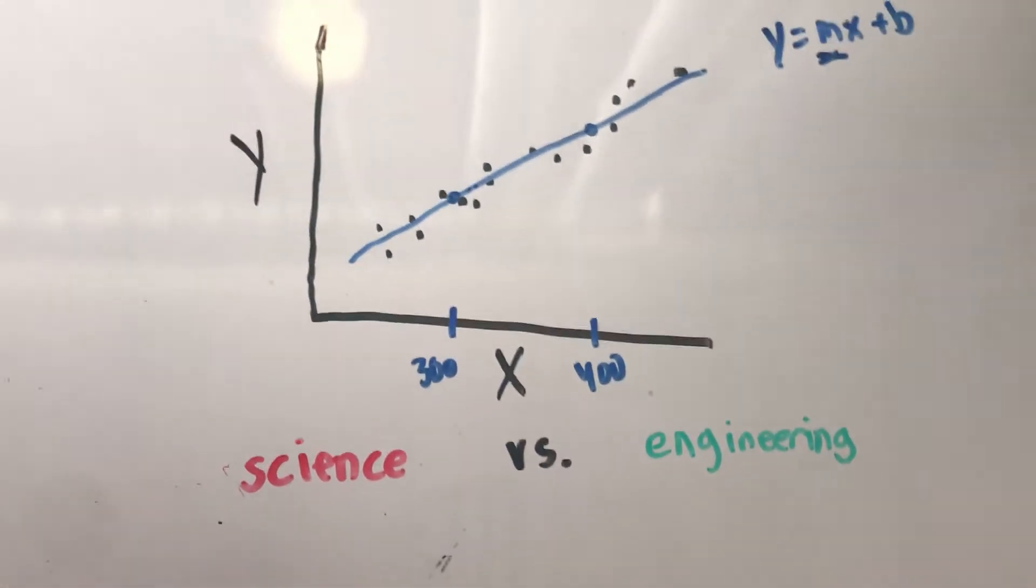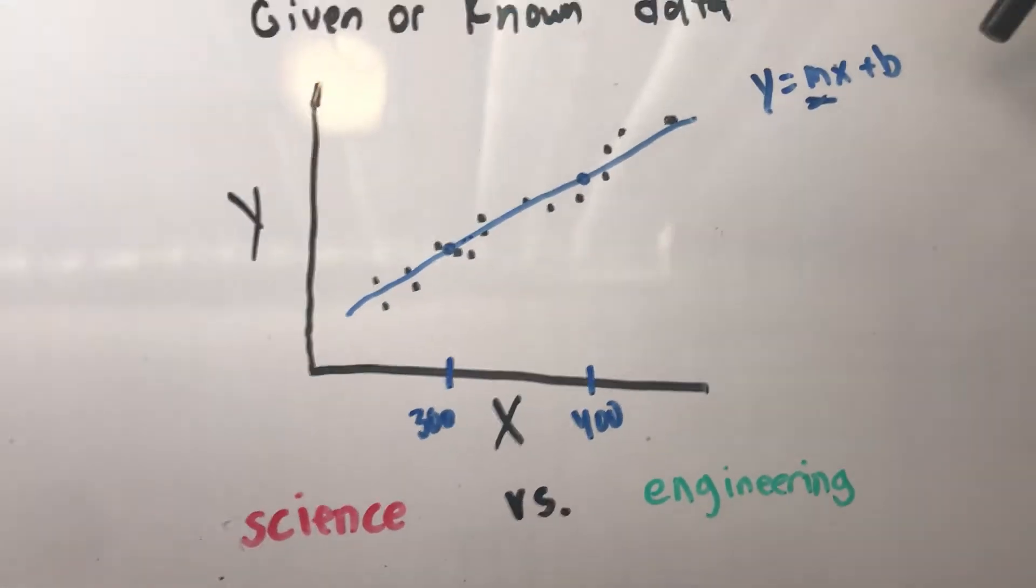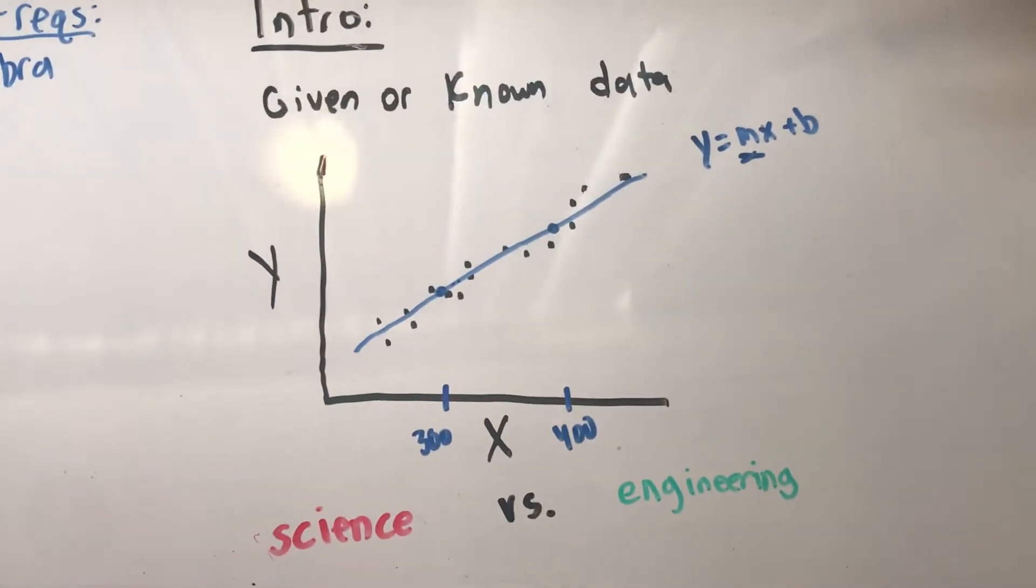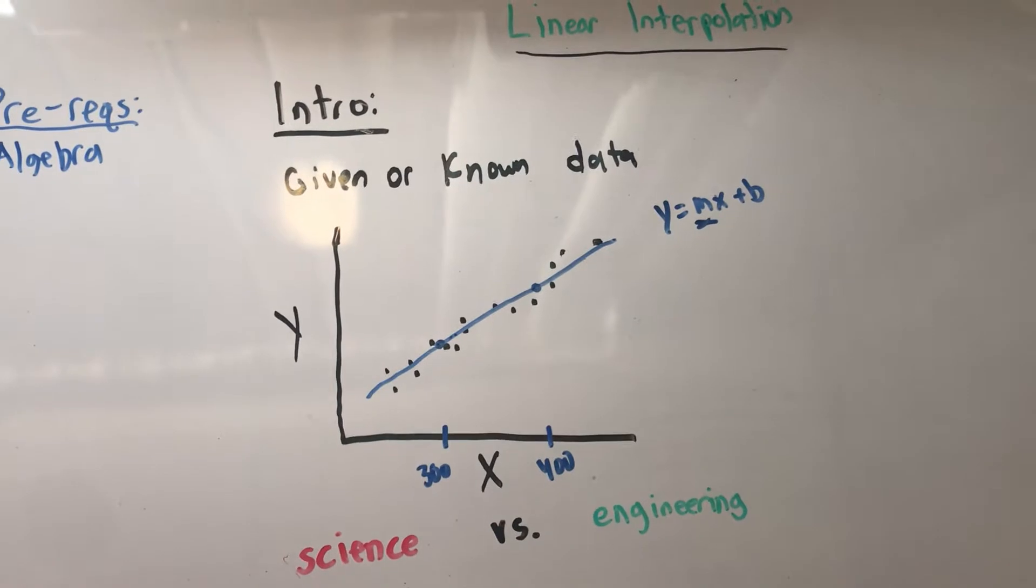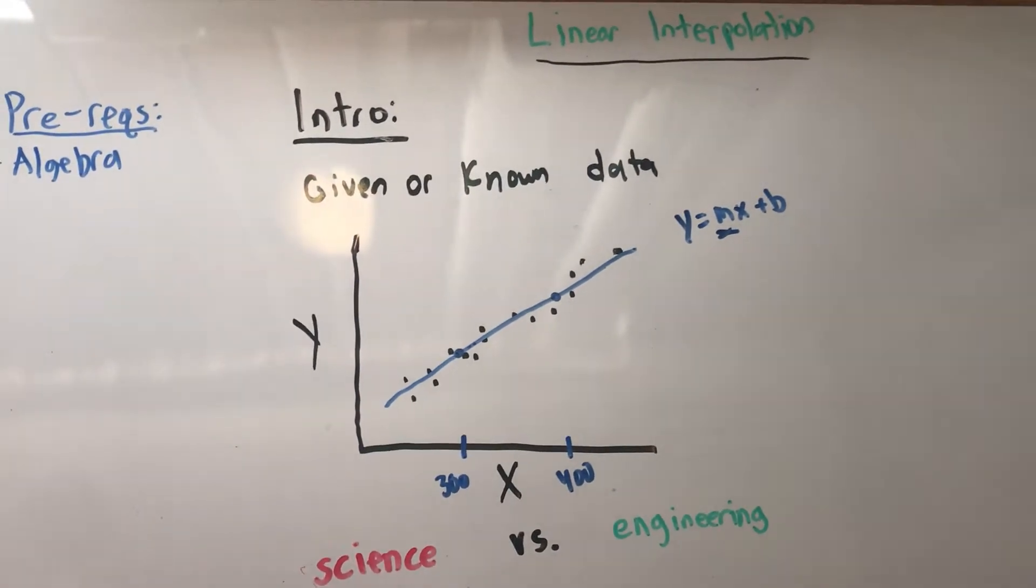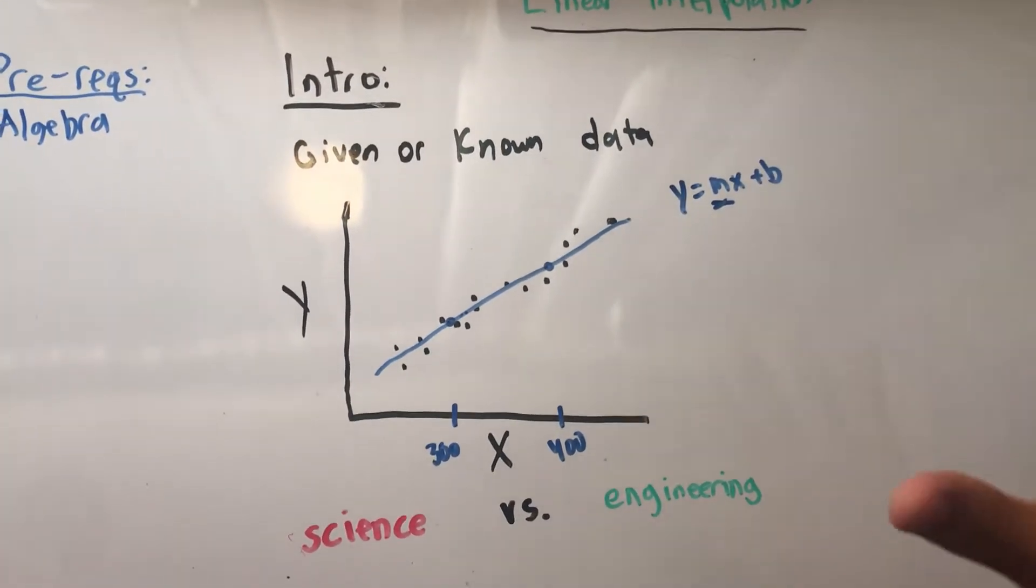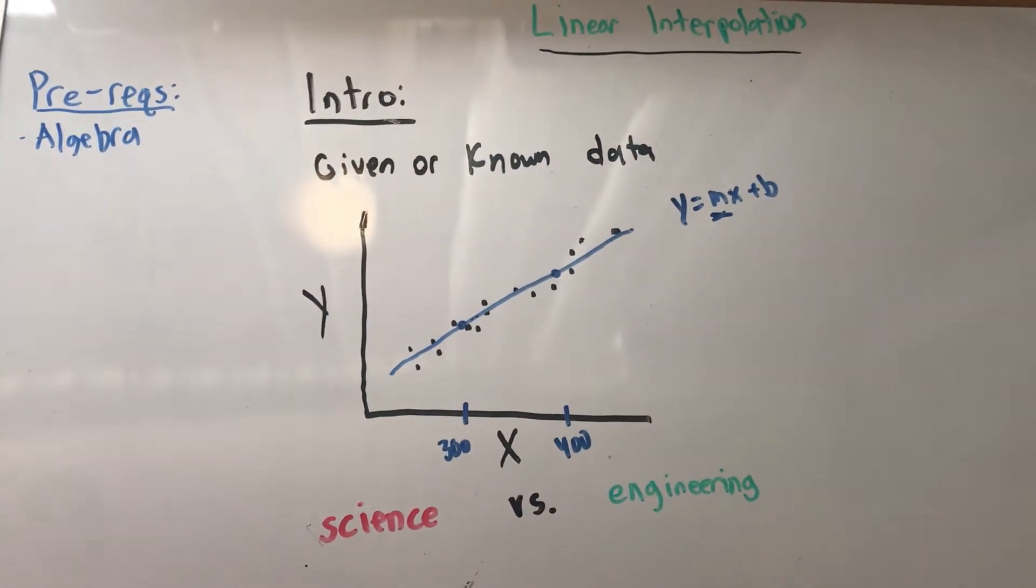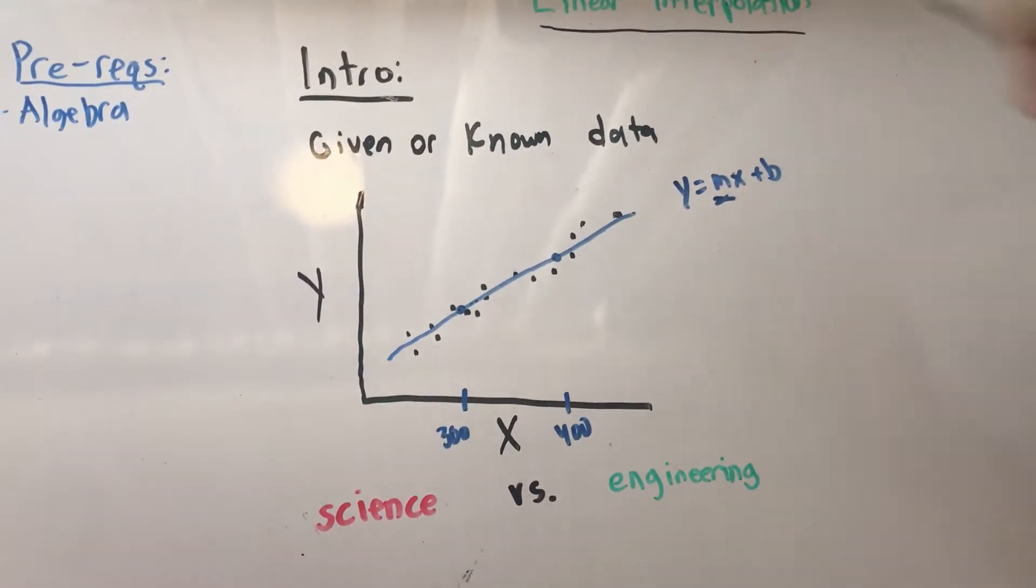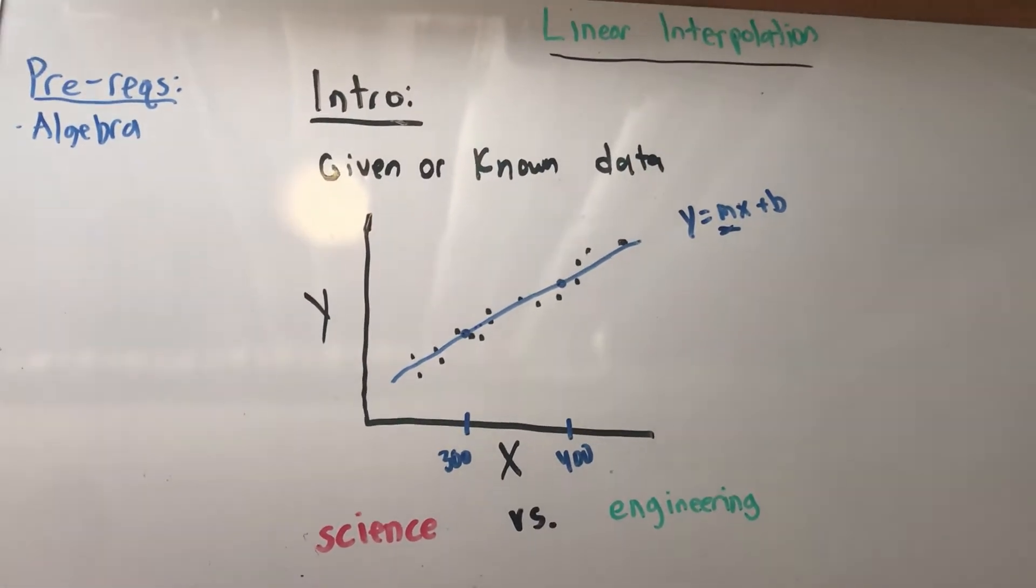The better your math is, the more accurate your engineering calculation is going to be. Today we're going to derive the equation to get linear interpolation. So how do you think we should do that? I challenge you to think about this by yourself for a little bit and see if you can derive it yourself. Your hint is you're going to use slope.